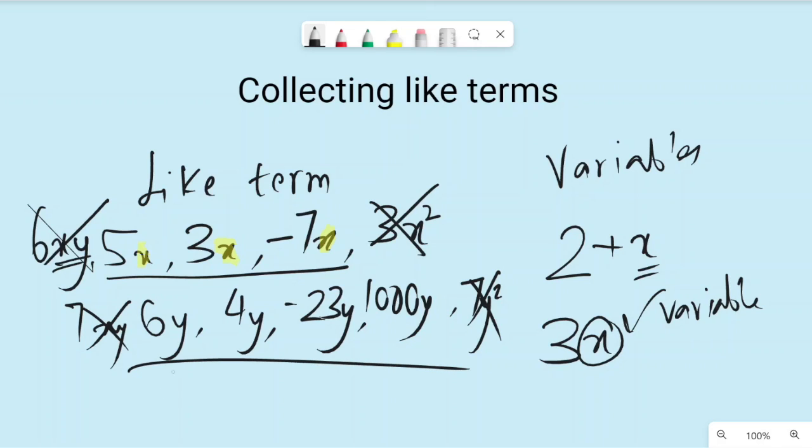Same way, even numbers, if they are only numbers without any variable, they are considered like terms while solving the problem. So if you have a 5, a 9, a negative 3, they all are like terms.